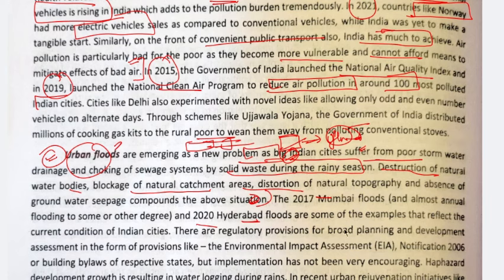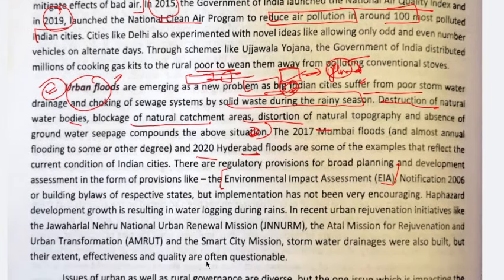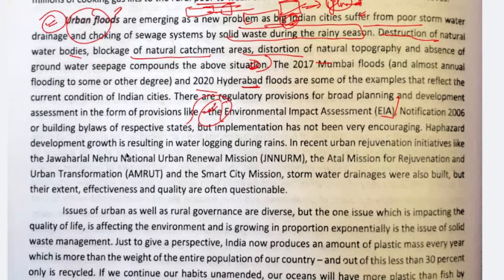There are some regulatory provisions such as Environment Impact Assessment — if a plant, company, or installation is being set up, an assessment of how much environmental damage it will cause must be done, and only then is permission granted. After that, they are required to provide green cover or implement environment-friendly policies and initiatives. However, how many actually follow these provisions — corruption is a known issue. There are also some government schemes so that urban areas can tackle all these issues.